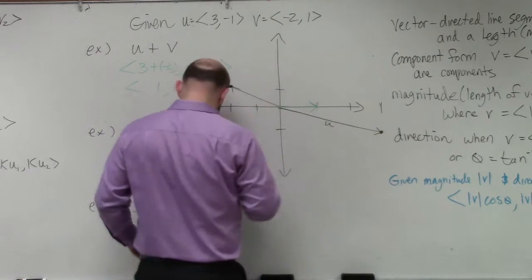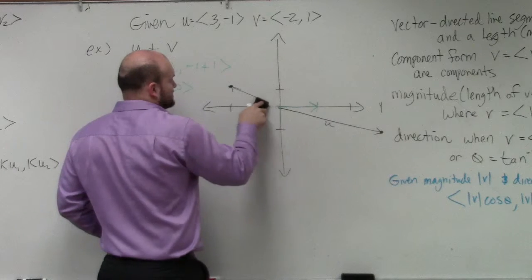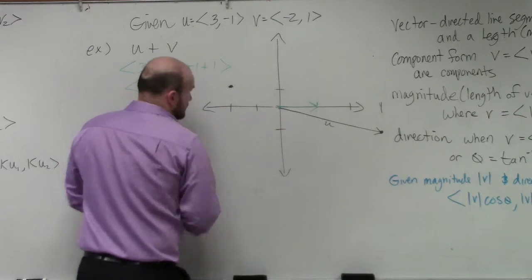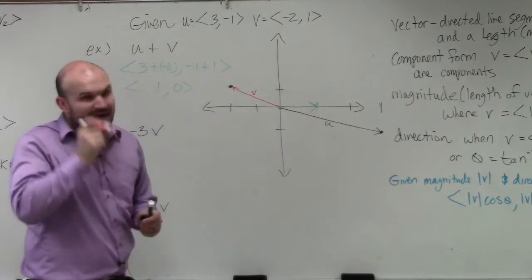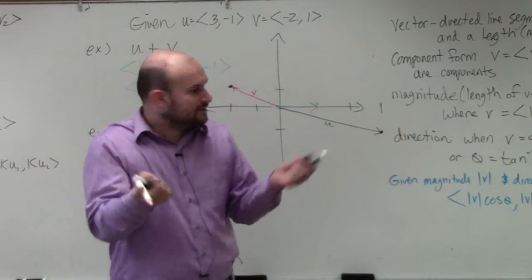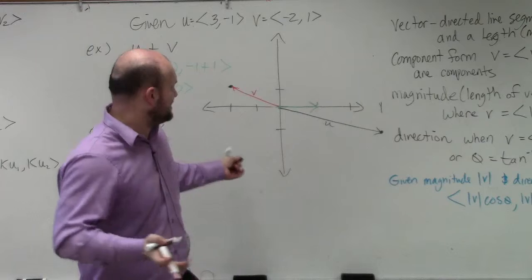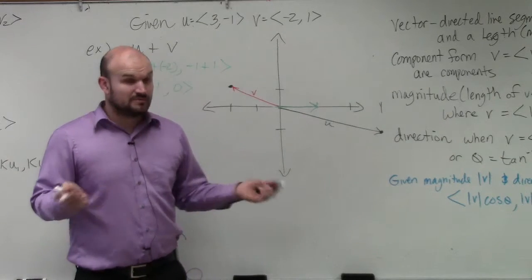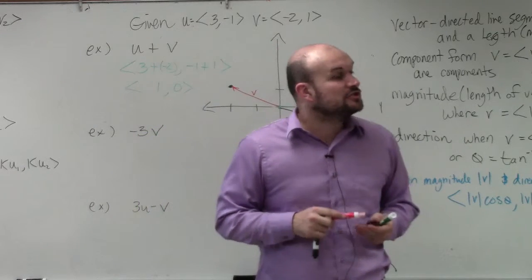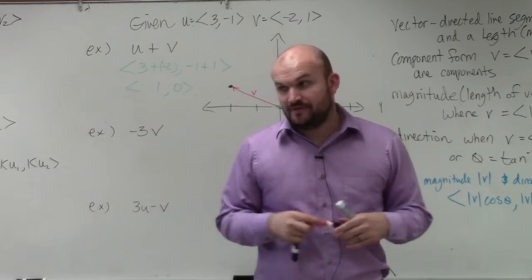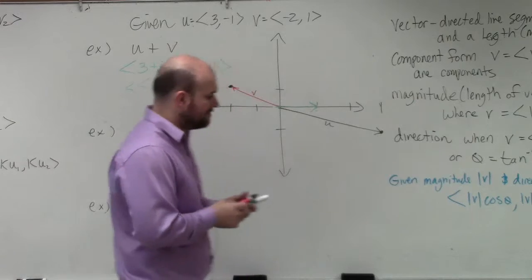So that's u. And actually, let's do v like this. So when I combine, when I add the black vector plus the red vector, I get the green vector. Now, you might agree with me or not agree with me, but one way that you can show this is what we call tail to head with your graphing, or also called the parallelogram method.